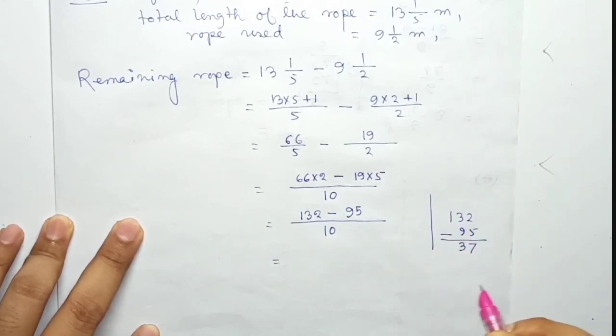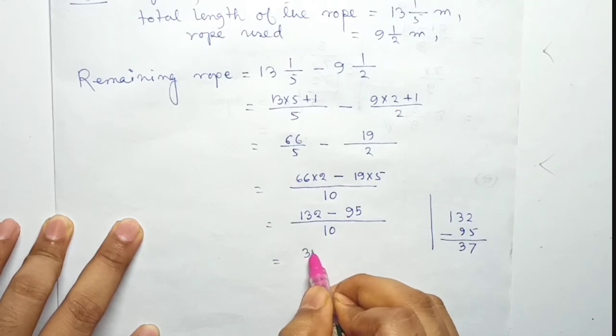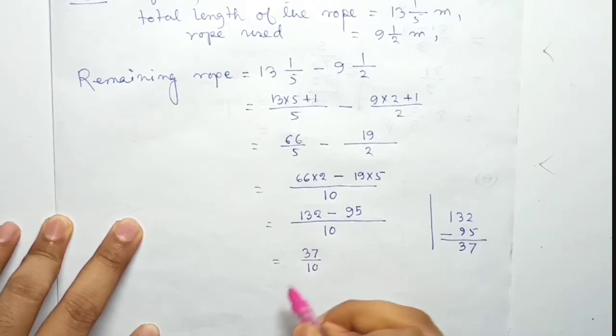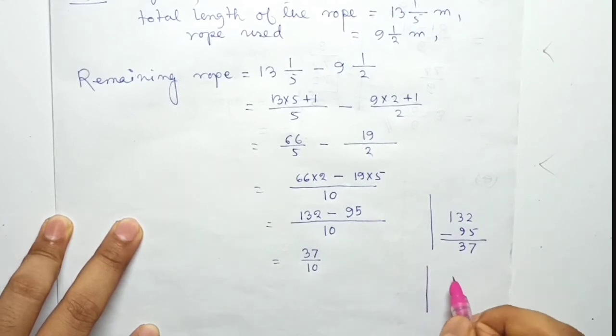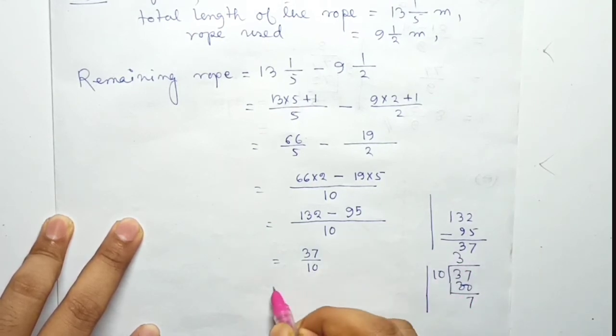Converting to mixed fraction: 37/10 = 3 and 7/10 meters.